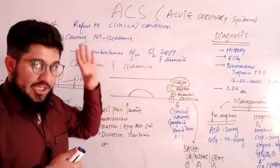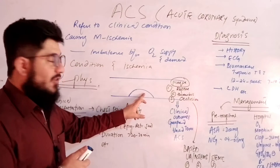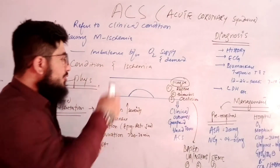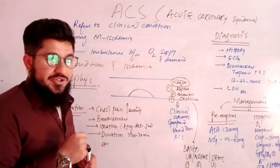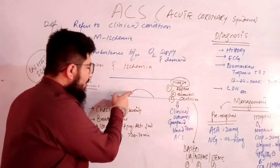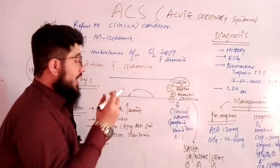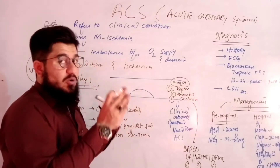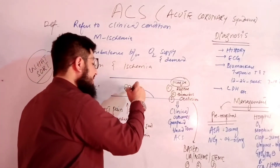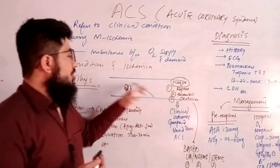Just like we discussed in our last lecture on angina, plaque formation takes place in the coronary arteries. This plaque will rupture, exposing collagen fibers and lipid content. Due to this, thrombus formation takes place, and this thrombus will cause occlusion of the blood vessel.